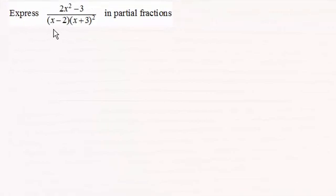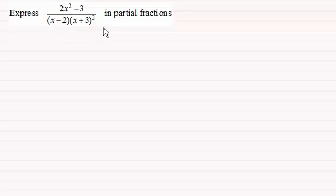Hi there. Now this is a follow-up example from the previous video in my series on partial fractions. What we've got to do here is just express 2x squared minus 3 all divided by x minus 2 times x plus 3 squared in partial fractions.